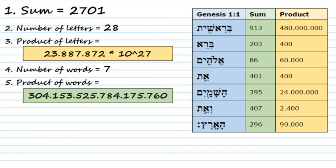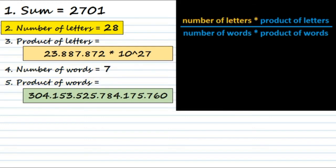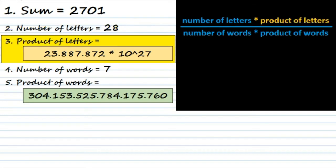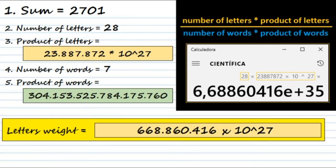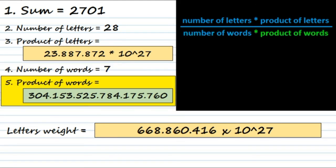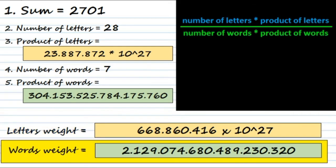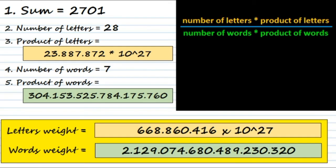A very simple and symmetrical formula was found that uses these values and gives an astonishing result. To obtain the encoded value of the verse, we divide the 'weight of the letters' — the number of letters multiplied by the product of letter values — by the 'weight of the words' — the number of words multiplied by the product of word values. This formula would be a meaningless game if it weren't for the surprising result it produces.